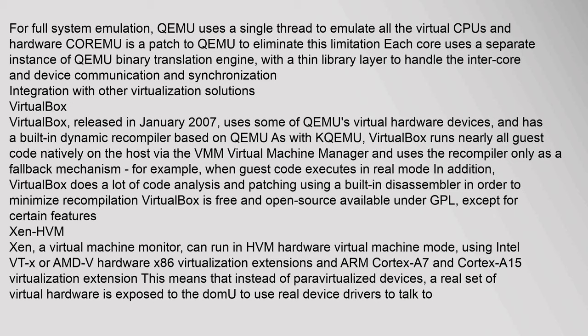VirtualBox, released in January 2007, uses some of QEMU's virtual hardware devices and has a built-in dynamic recompiler based on QEMU. Like KQEMU, VirtualBox runs nearly all guest code natively on the host via its VMM (Virtual Machine Manager) and uses the recompiler only as a fallback — for example when guest code executes in real mode. VirtualBox also performs code analysis and patching using a built-in disassembler to minimize recompilation. VirtualBox is free and open source, available under the GPL except for certain features.